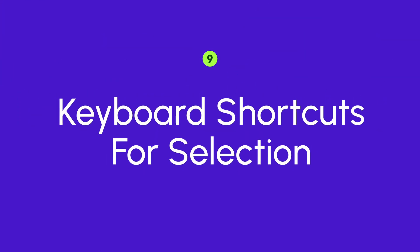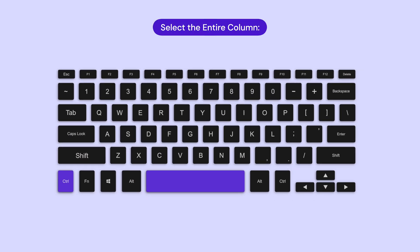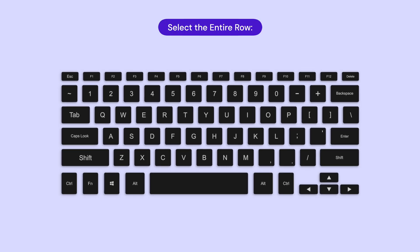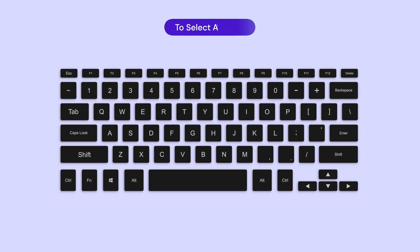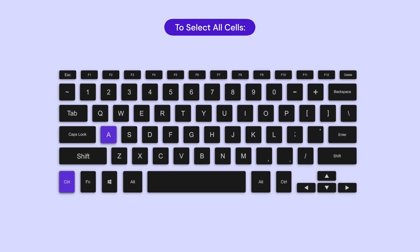Our last tip of the day is keyboard shortcuts for selection. Selecting cells, rows, or columns is a frequent task in Google Sheets. To select the entire column, hold Ctrl + Space. To select the entire row, hold Shift + Space. And to select all cells, hold Ctrl + A. Once you start using these selection shortcuts, you'll wonder how you ever managed without them.